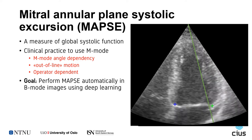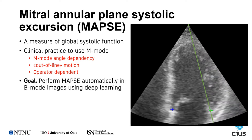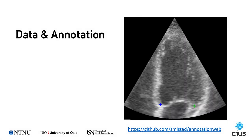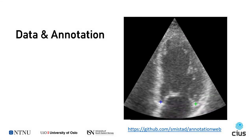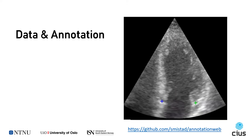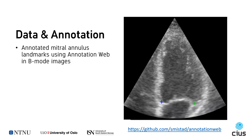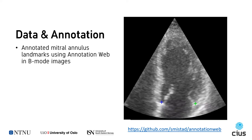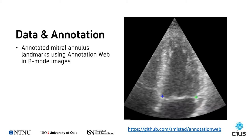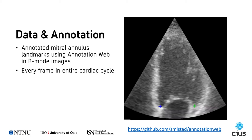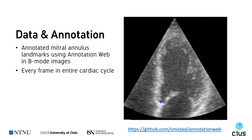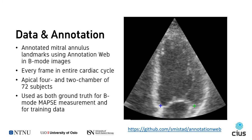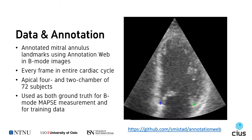Thus, the goal of this study was to perform MAPSE automatically in B-mode images instead of M-mode using deep learning. To do this, we first had to annotate the mitral annulus in ultrasound B-mode recordings. We did this using our open source annotation web system, where the left and right annulus landmarks, shown in blue and green, were annotated by an expert in every frame in the entire cardiac cycle. This was done on both apical 4 and 2 chamber recordings of 72 subjects. Since M-mode measurements are not directly comparable to B-mode measurements, these annotations serve both as ground truth measurements and as training data.